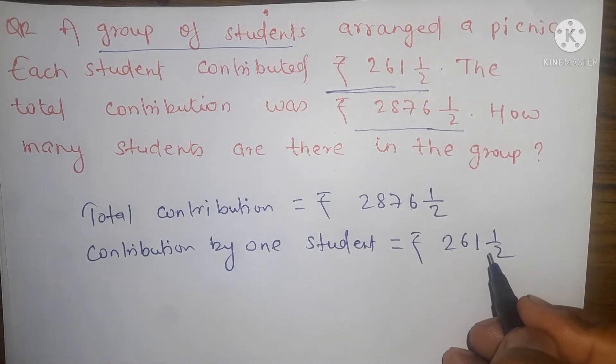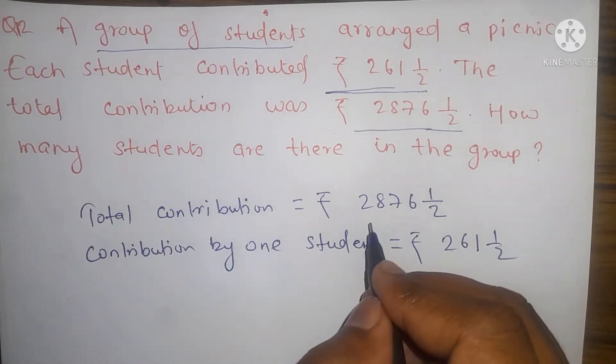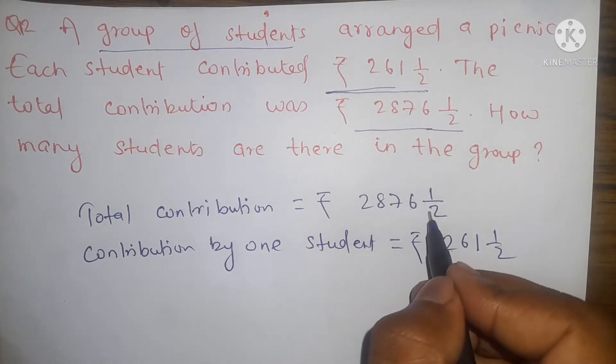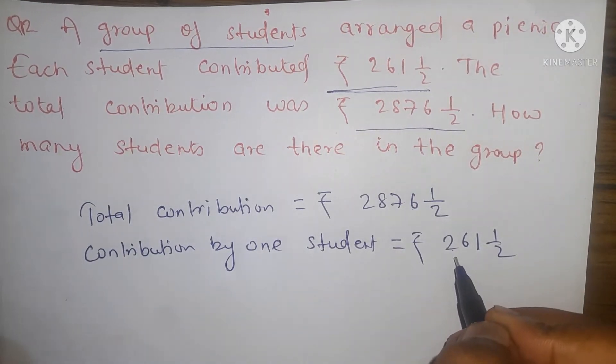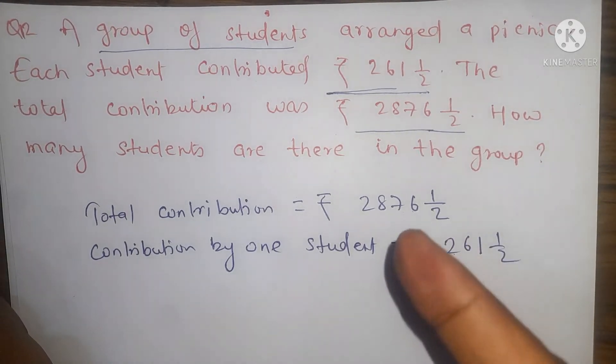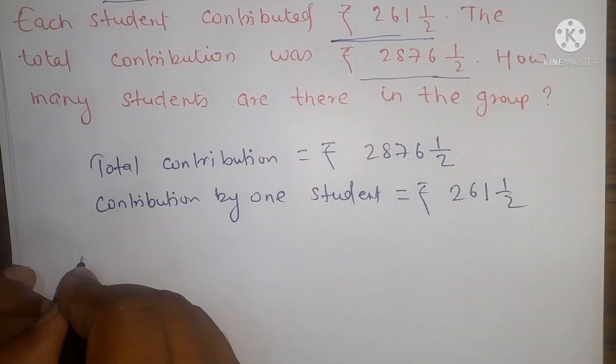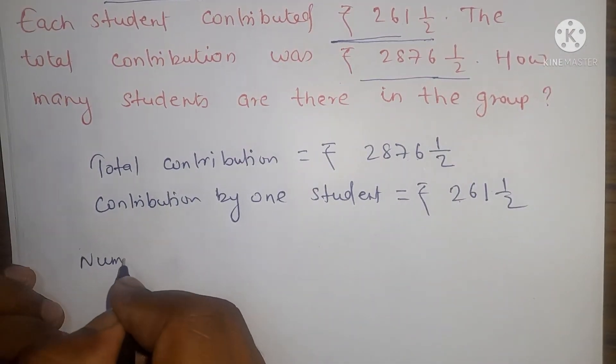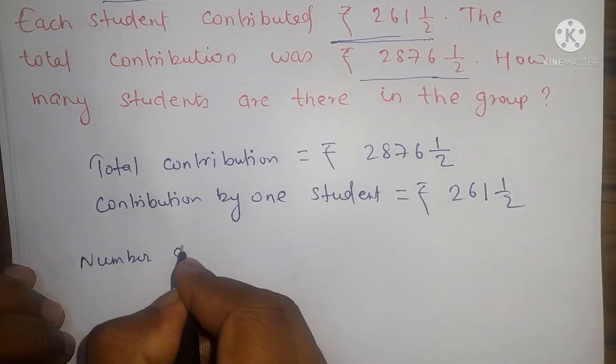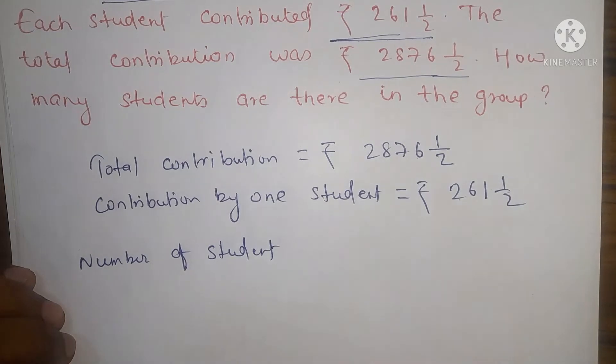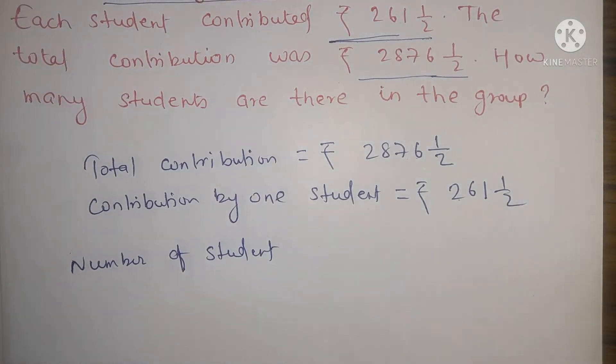Each student gave 261 upon 1 by 2 rupees. All children together gave this total money, and each child is equally contributing. So we're asked how many total students participated in the picnic. Number of students - simply write number of students participating in picnic.